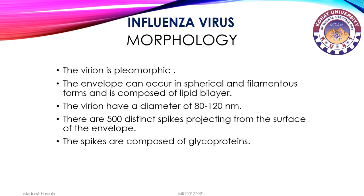The virion is pleiomorphic, meaning it can change its shape due to mutation. The envelope can occur in spherical and filamentous forms and is composed of a lipid bilayer. The virion has a diameter of 80 to 120 nm. There are 500 distinct spikes projecting from the surface of the envelope, composed of glycoproteins, and their function is attachment.